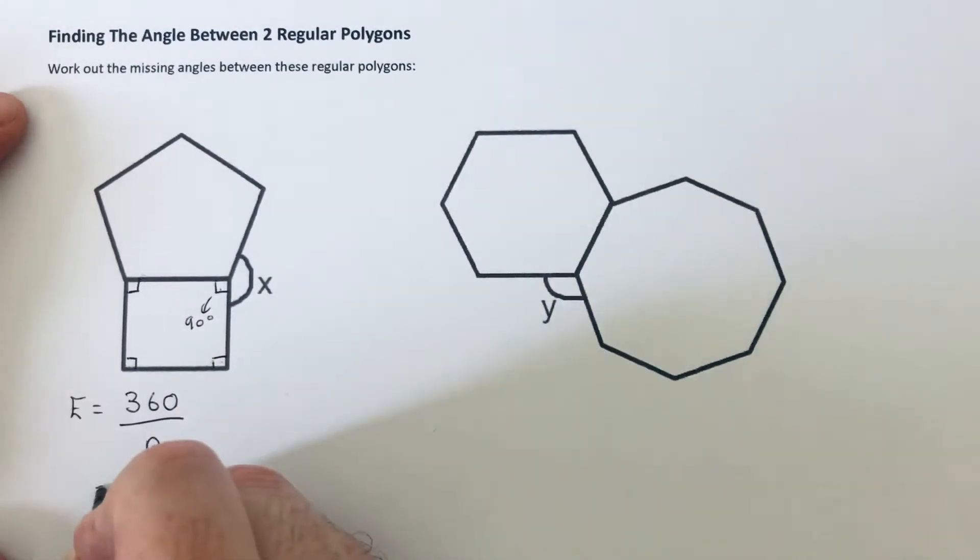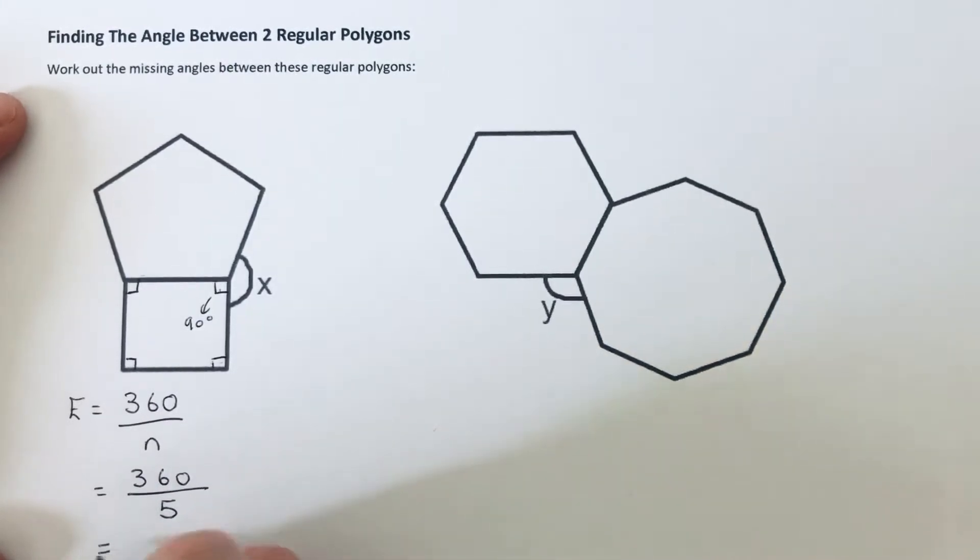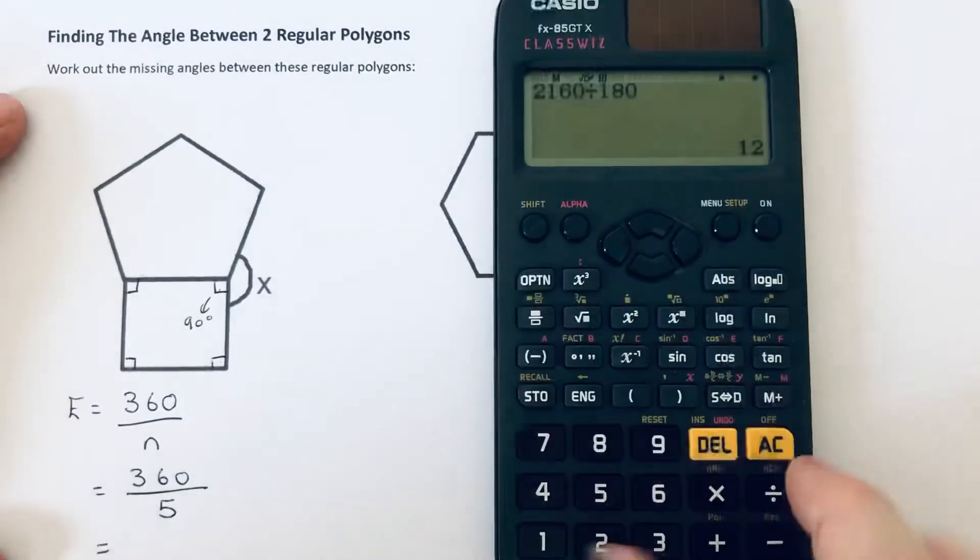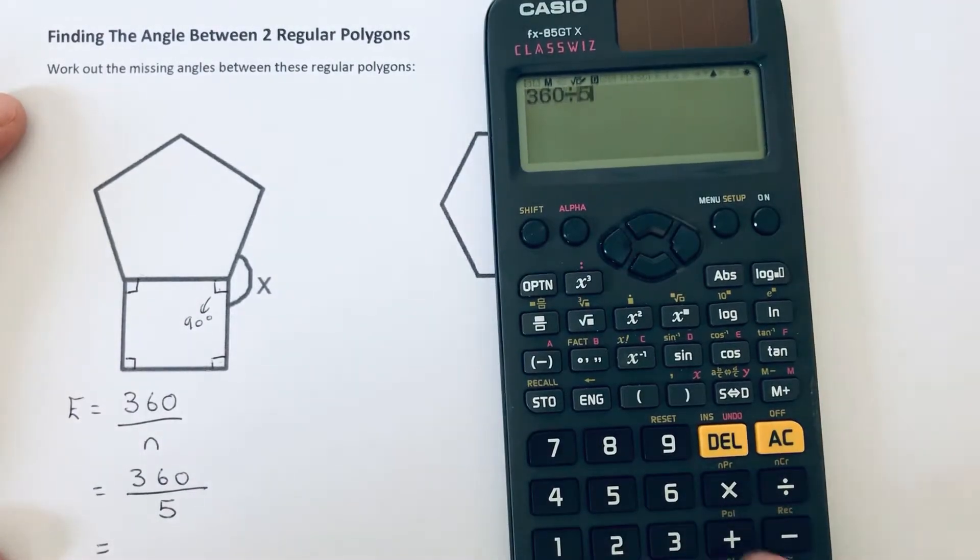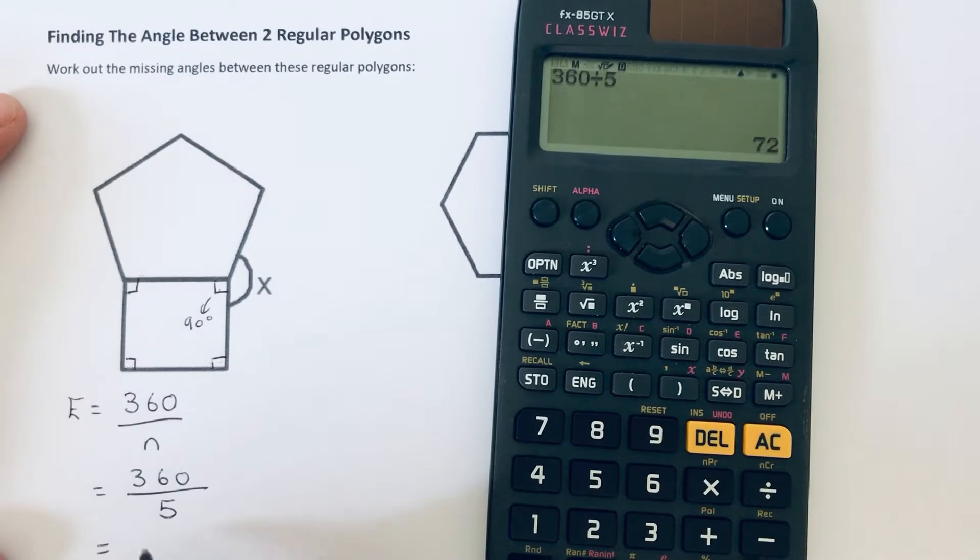So our polygon has five sides because it's a pentagon. So 360 divided by 5 is 72 degrees.